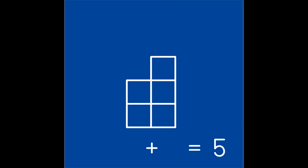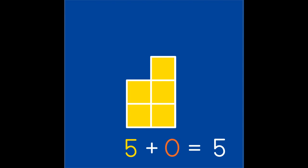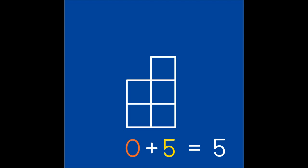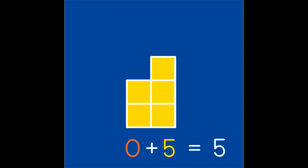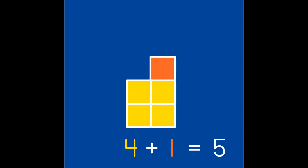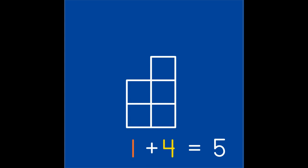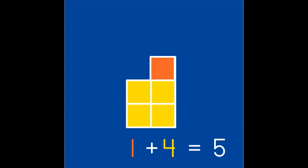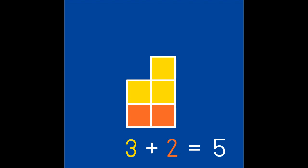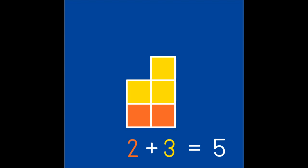You know all the ways to combine the partners to make five. Let's review. Five and zero are partners of five, and we can switch the partners and say zero and five are partners of five. Four and one make five, or one and four make five — it does not matter which partner comes first. Three and two are partners of five, and we can say two and three are partners of five.